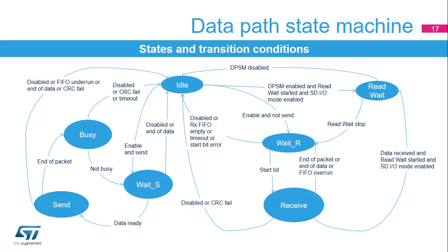The Data Path State Machine (DPSM) controls the transmission and reception of all data. When the DPSM is in idle state, the first transition is triggered when the DPSM enable bit and transfer direction are set. Note: the DPSM enable bit must not be used to transfer data with SD, SDIO, and MMC cards. For data transmission, when enabled, the DPSM moves from idle to wait S state and then to send state. While in wait S state, the DPSM waits until the data FIFO empty flag is deasserted. When data is available in the FIFO buffer, the DPSM moves to the send state, and starts sending data to a card according to the data rate, bus mode, and bus width set in the control register.